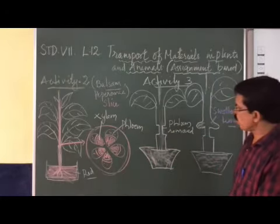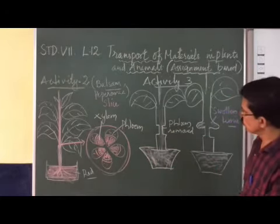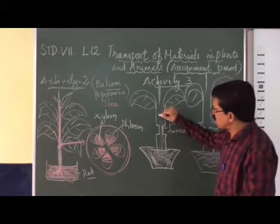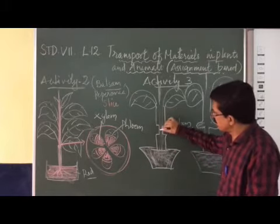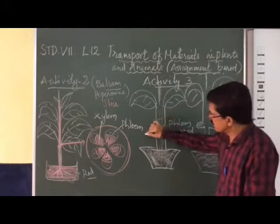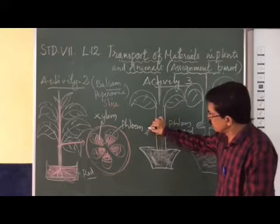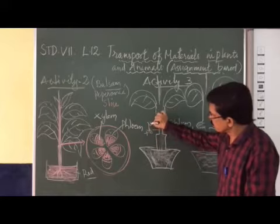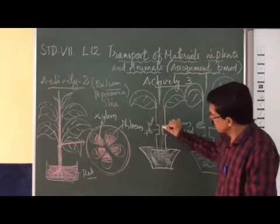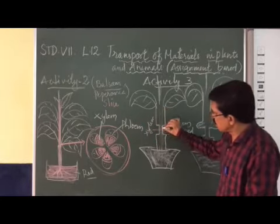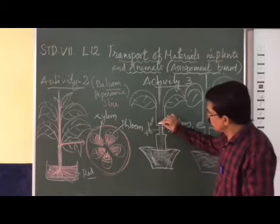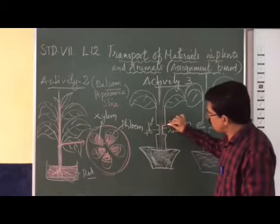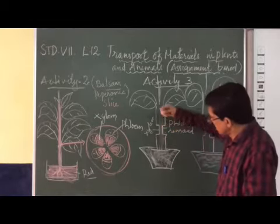As we know, the outside of the stem is phloem and the inside is xylem. So what you can do is cut the phloem in a ring and remove it.